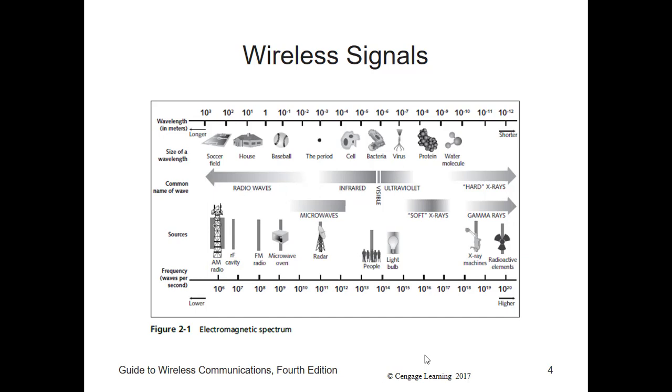There are two types of waves by which wireless data is sent and received: infrared waves and radio waves.